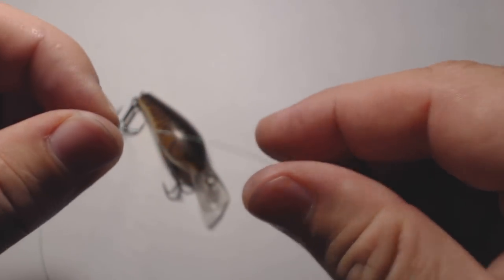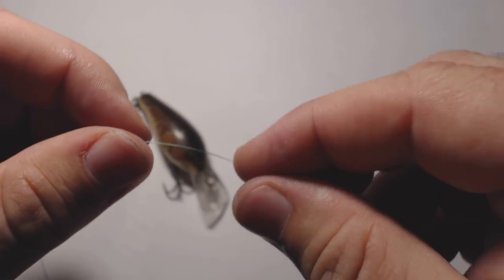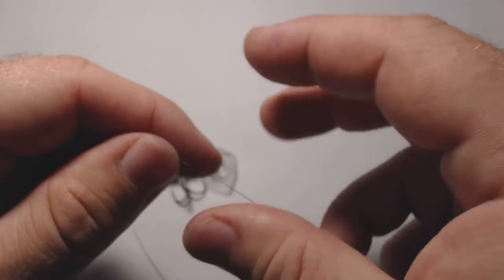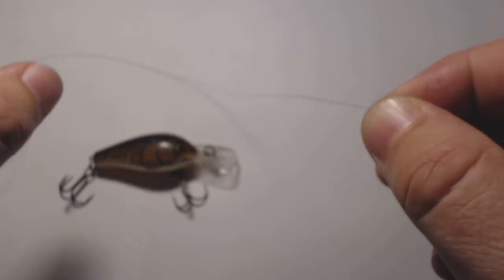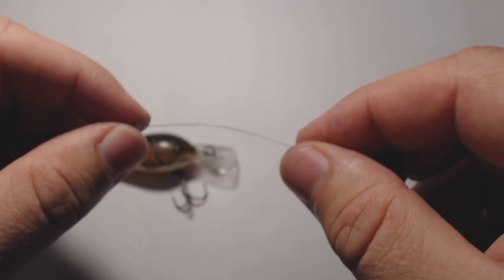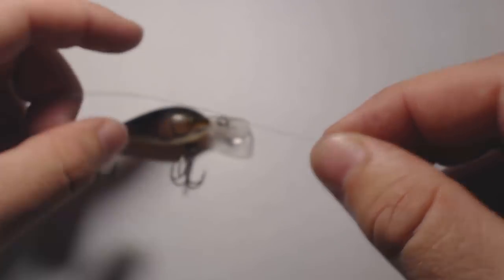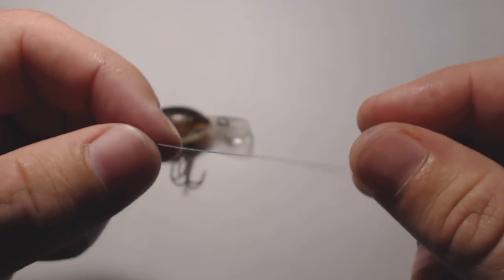This is a knot for most of your Rapalas or any of your crankbaits that are vibrating in the water. You want that loop, which is what this knot does. It creates a little bit of a loop so there's more room for your lure to wobble, and ideally it'll give it more wobble in the water, which means more fish.